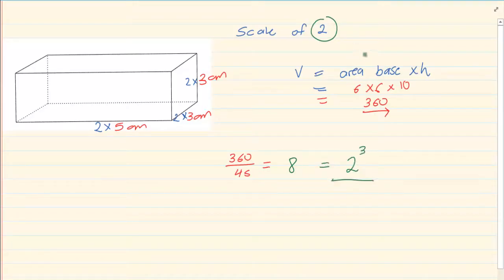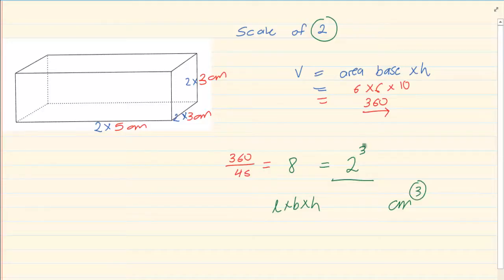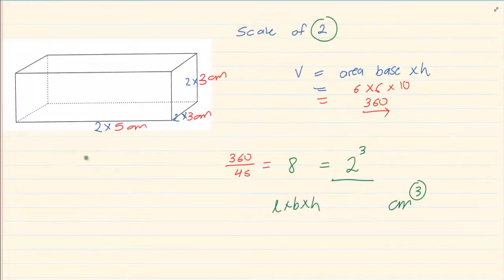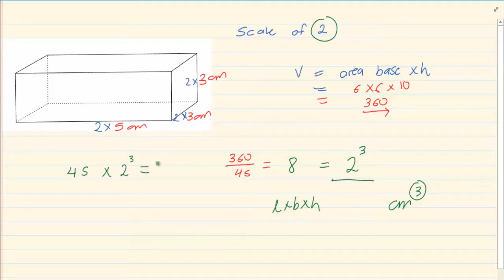Now remember volume is 3 dimensional — it's length times breadth times height. That's how come you always write your answer in a cube. So 2 to the power of 3. So if I want to calculate this without doing an entire calculation, I would have said the original volume which was 45, and then I would have multiplied it by 2 to the power of 3, which will still give me 360 centimeters cubed.